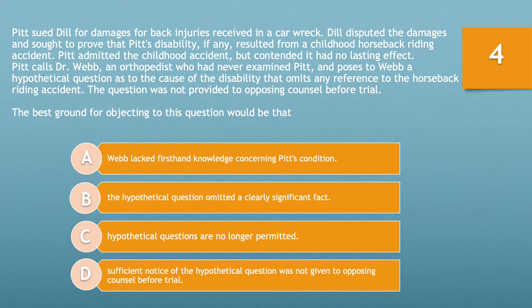Question number four. Pitt sued Dill for damages for back injuries received in a car wreck. Dill sought to prove that Pitt's disability, if any, resulted from a childhood horseback riding accident. Pitt admitted the childhood accident but contended it had no lasting effects. Pitt calls Dr. Webb, an orthopedist who had never examined Pitt, and poses a hypothetical question as to the cause of the disability that omits any reference to the horseback riding accident. The question was not provided to opposing counsel before trial.